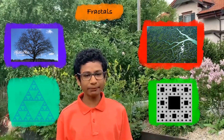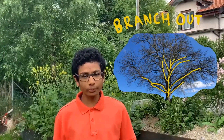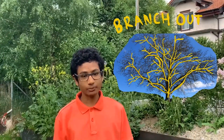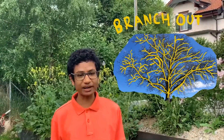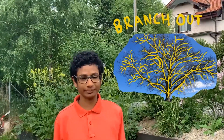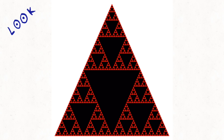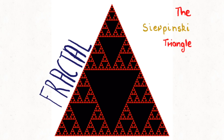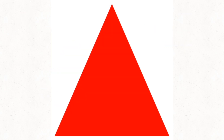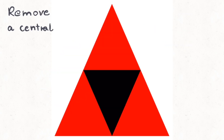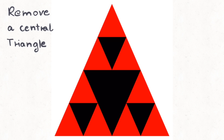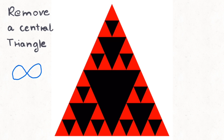Fractals are generated by repeating a certain rule over and over again, mostly an infinite amount of times. Have a look at this. The Sierpinski Triangle, a geometric fractal, is created by starting with a triangle and applying the rule to remove a small central triangle from a larger triangle forever.